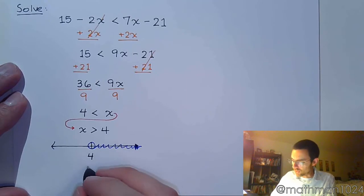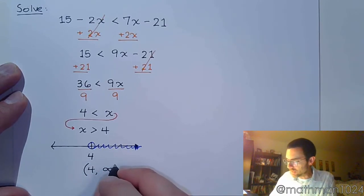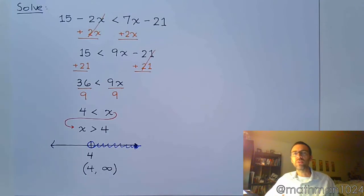Interval notation for this is going to say that you go from 4 to the right, which is toward infinity. Since we are not including 4, it's going to be parentheses, and always parentheses on infinity.